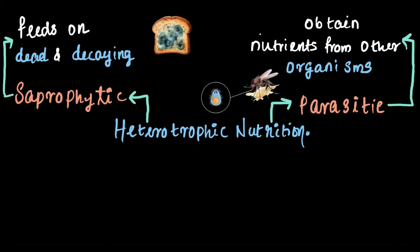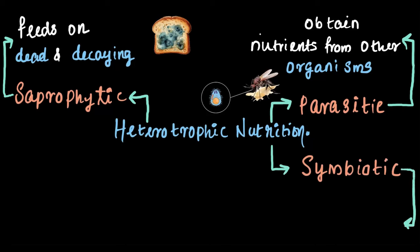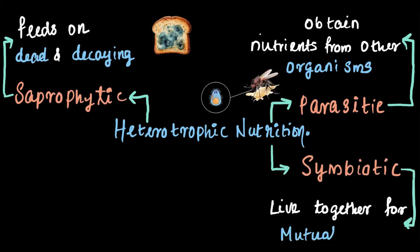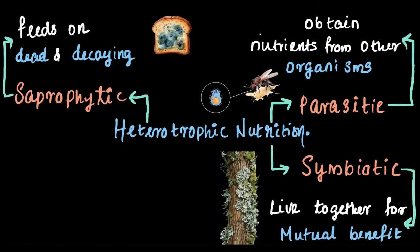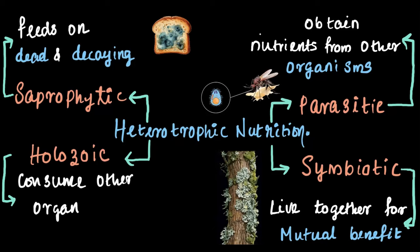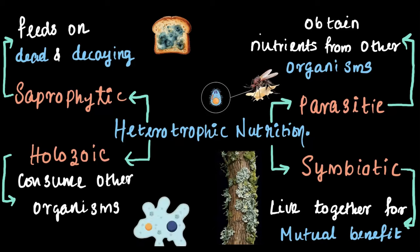The third type of heterotrophic nutrition is symbiotic nutrition, where there exists a symbiotic relationship — organisms live together for mutual benefit, just like in lichens, where fungus and algae live together and benefit from each other. And finally, the most common type is holozoic nutrition, where organisms consume other organisms — like an amoeba feeding on food particles, to human beings eating a variety of food, to cows grazing on grass.